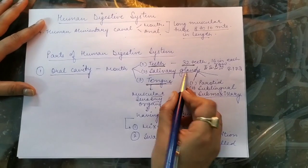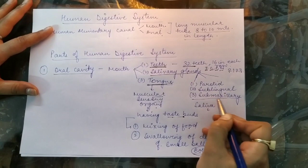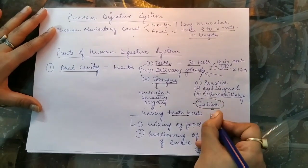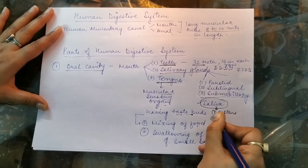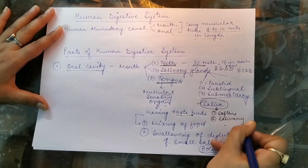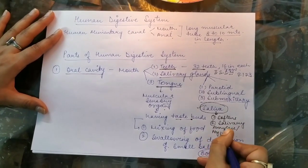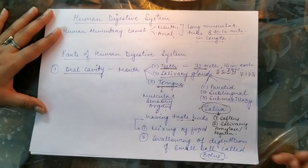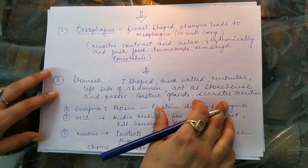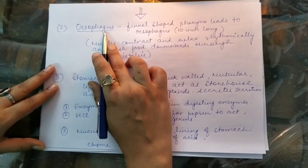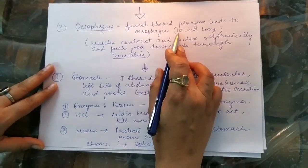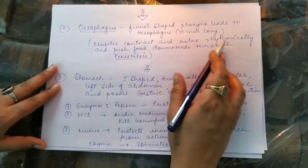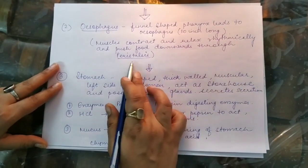The third structure is the salivary glands. There are three sets: parotid, sublingual, and submaxillary. These glands secrete saliva, which is important for digestion. It softens the food and contains an important enzyme called salivary amylase, also known as ptyalin (the P is silent). This enzyme helps break down sugars present in food into simple sugars called maltose. The second part of the alimentary canal is the esophagus, which is about 10 inches long. It does not play a role in digestion but its muscles contract and relax rhythmically, pushing food downward through a movement called peristalsis.